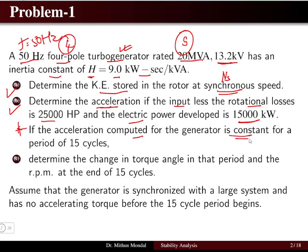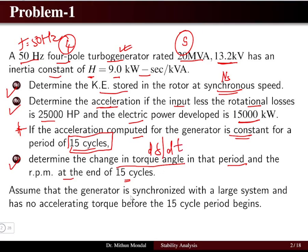The acceleration is computed assuming it is constant for a period of 15 cycles. We also need to find the change in the torque angle delta — that is d-delta/dt — and the RPM at the end of the 15-cycle period, assuming the generator is synchronized with a large system and has no accelerating torque before the 15-cycle period begins.